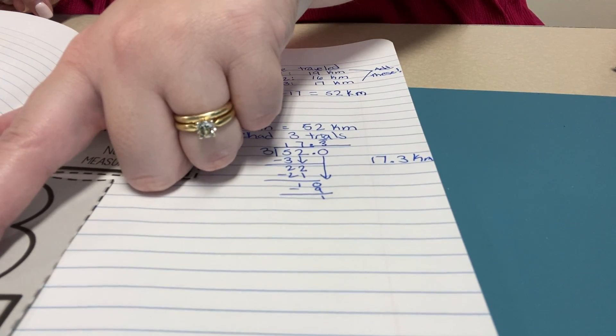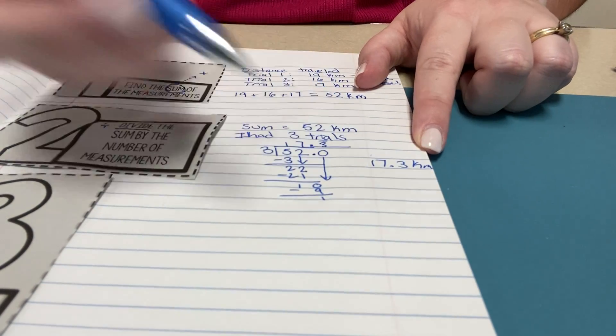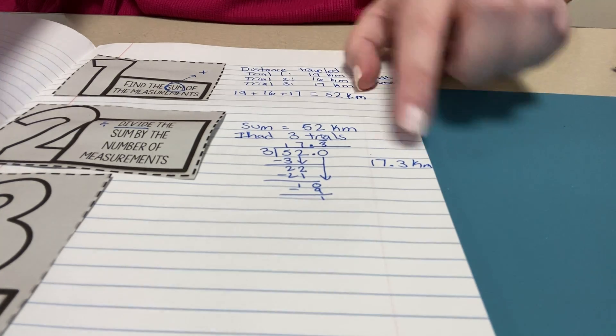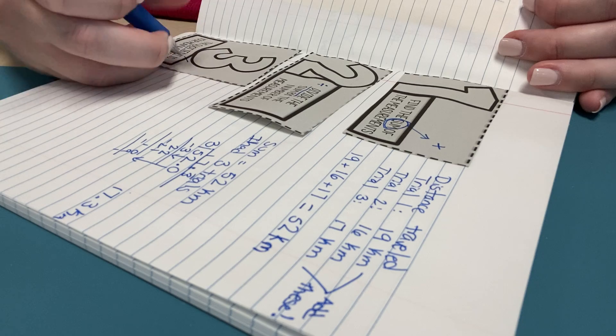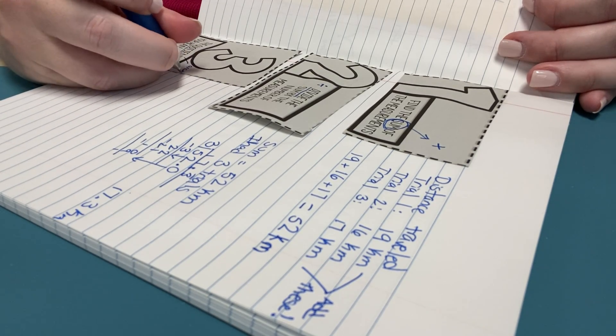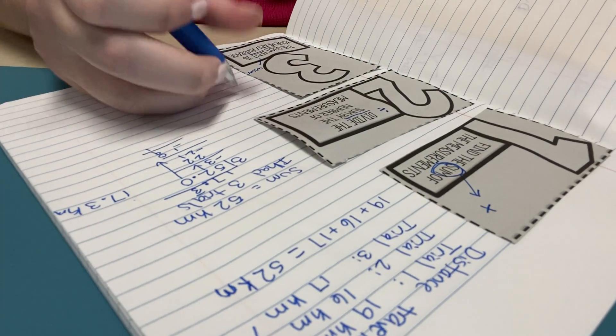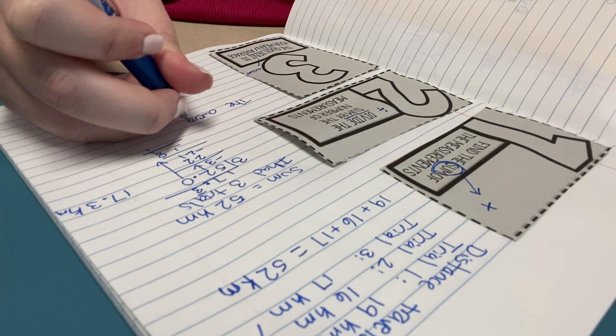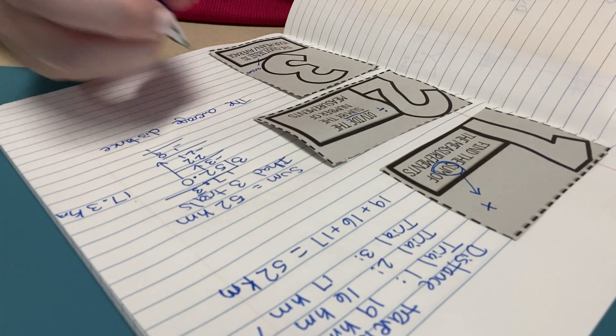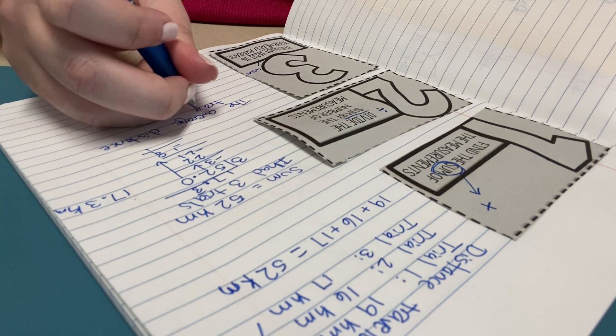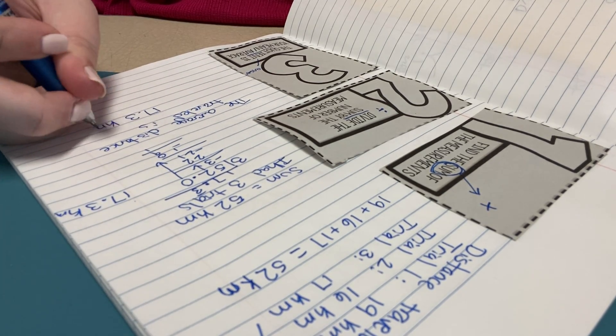So the quotient or the answer is your average. So what I got here of 17.3 is my answer for step three. So I'm going to underline the word quotient and I'm going to write the word answer. Quotient means answer in a division problem. So the average distance traveled is 17.3 kilometers.